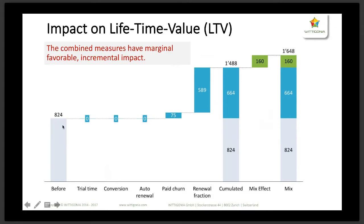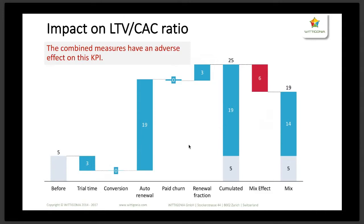Looking at other KPIs, the picture is less clear. For lifetime value specifically, the combined effect is only an additional 160. Before any optimization, the average lifetime value of a customer would be 824 — euros, dollars, or whatever your currency is. After optimization the lifetime value would be roughly double that: 1,648. Some tactics do not have an impact on lifetime value — they may help in other areas but not there. The combined impact is somewhat lower here compared to the revenue impact example.